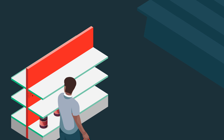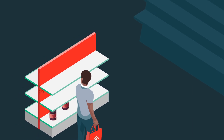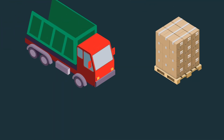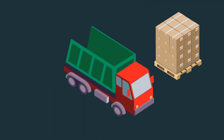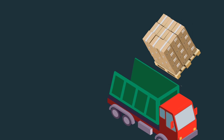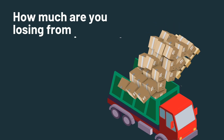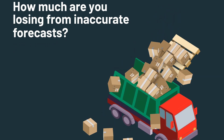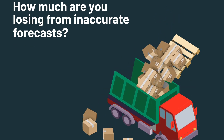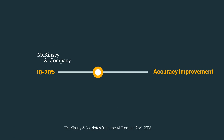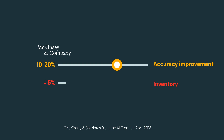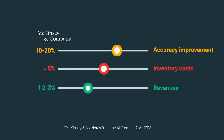Whether it's lost sales from not having product when customers need it, or increased costs from excess inventory leading to discounting and spoilage, how much are you losing from inaccurate demand forecasting? McKinsey and Company estimate a 10 to 20 percent improvement in forecasting accuracy leads to a 5 percent reduction in inventory costs and a 2 to 3 percent increase in revenues.